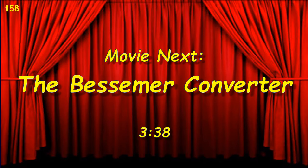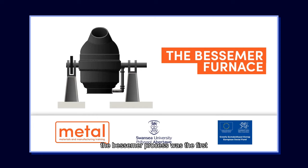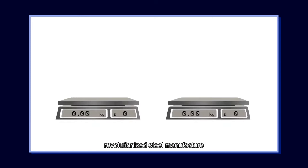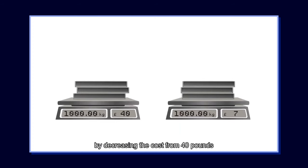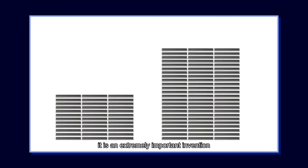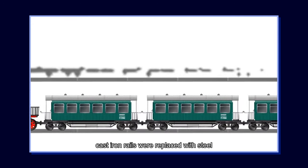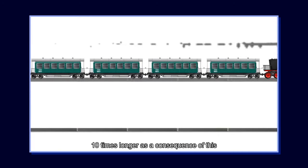We will next have a short video clip on the operation of the Bessemer converter. The Bessemer process was the first inexpensive process for the mass production of steel from molten pig iron, before the development of the open hearth process. The process revolutionized steel manufacture by decreasing the cost from £40 per tonne to £6–£7 per tonne, along with increasing the scale and speed of production. It was an extremely important invention because it enabled the manufacture of stronger metal machines and innovative architectural structures. In addition, cast iron rails were replaced with steel rails because they lasted ten times longer.